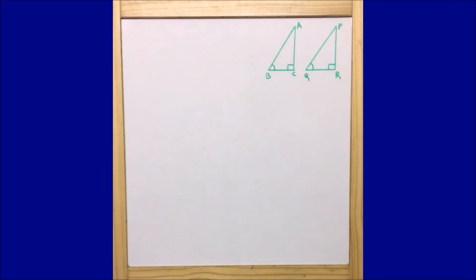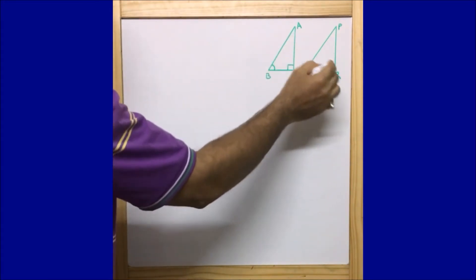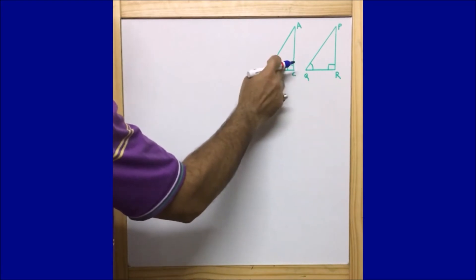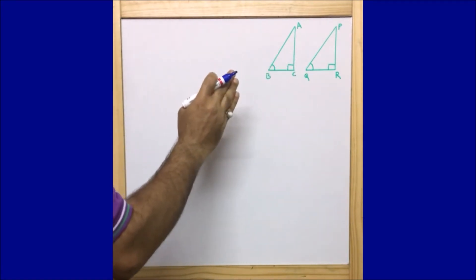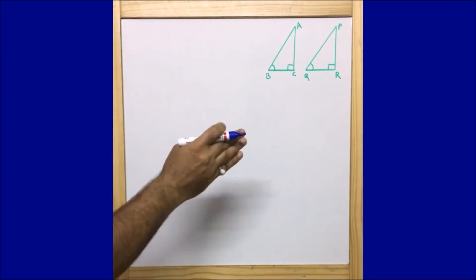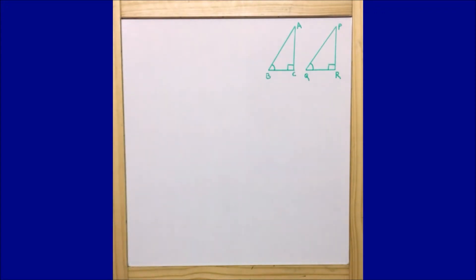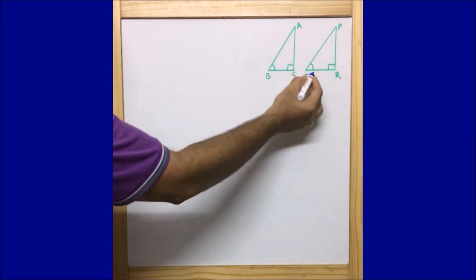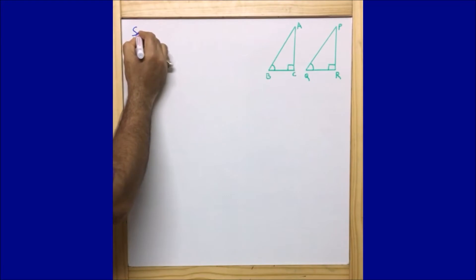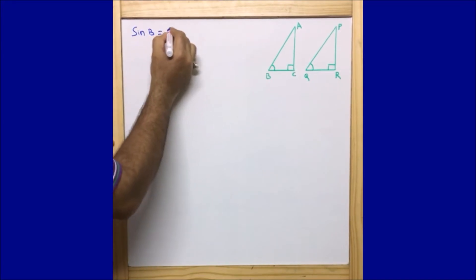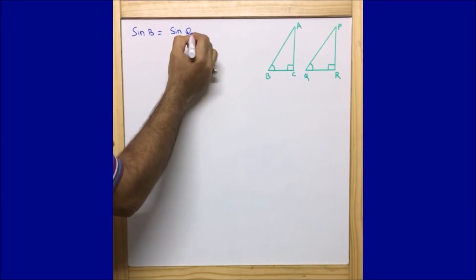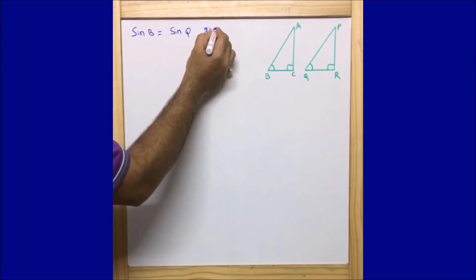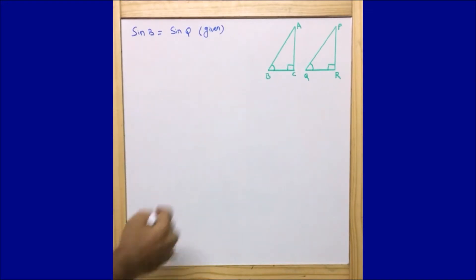Moving on to the solution — as per the question, it is given that angle B and angle Q are acute angles such that sine B is equal to sine Q, and we need to prove angle B is equal to angle Q. I have drawn here two right-angle triangles ABC and PQR, where angle B and angle Q are acute angles. An acute angle is the angle which is less than 90 degrees.